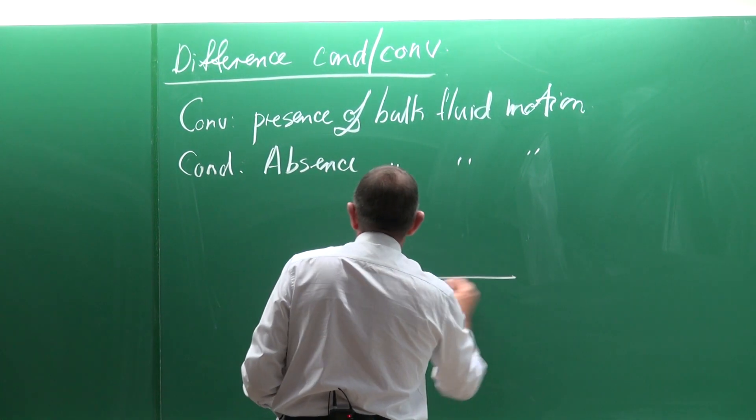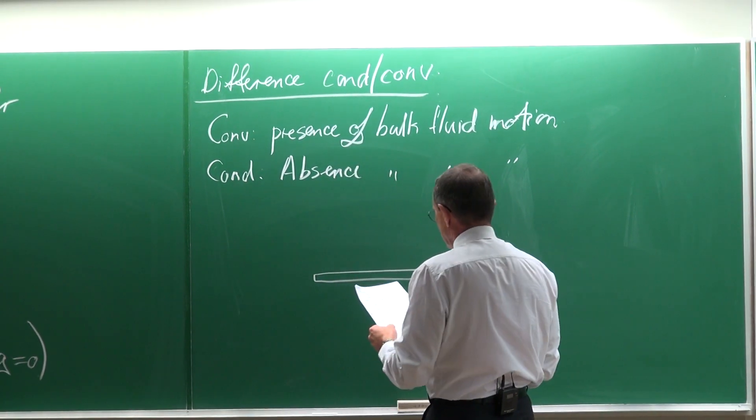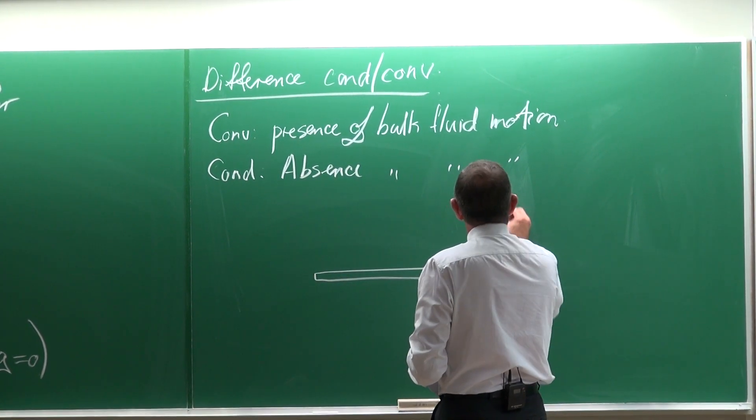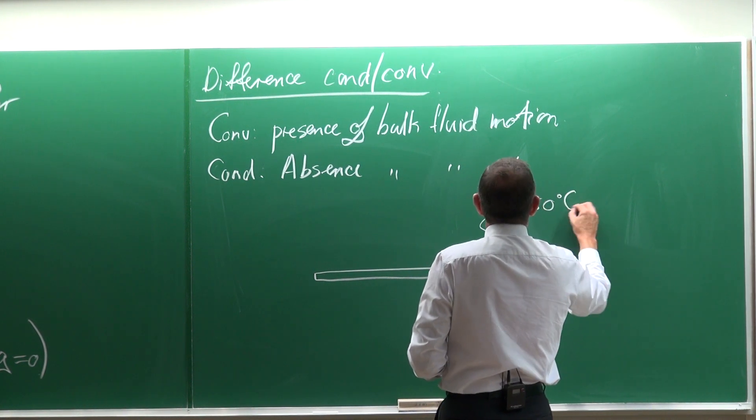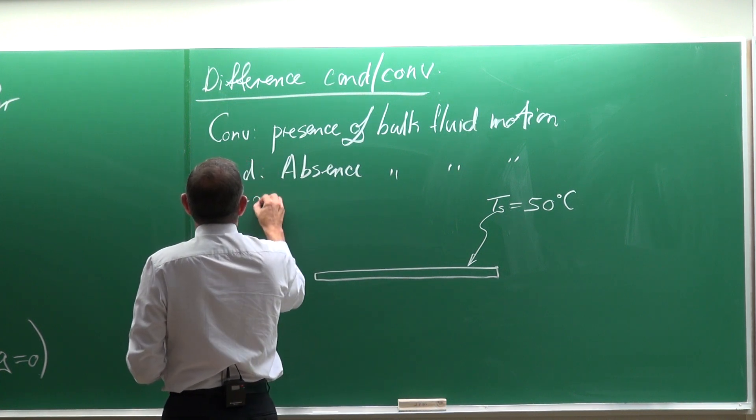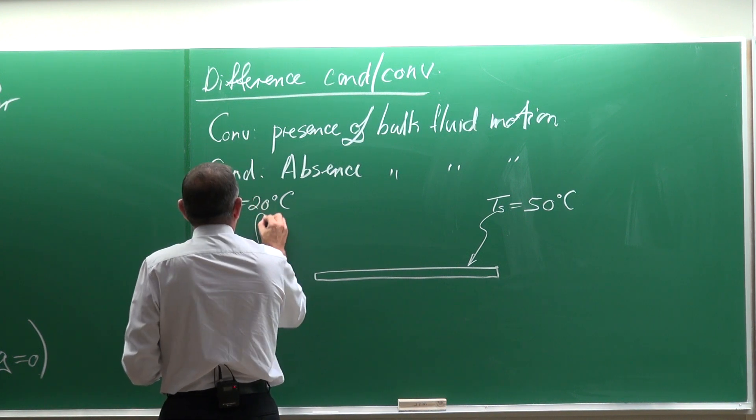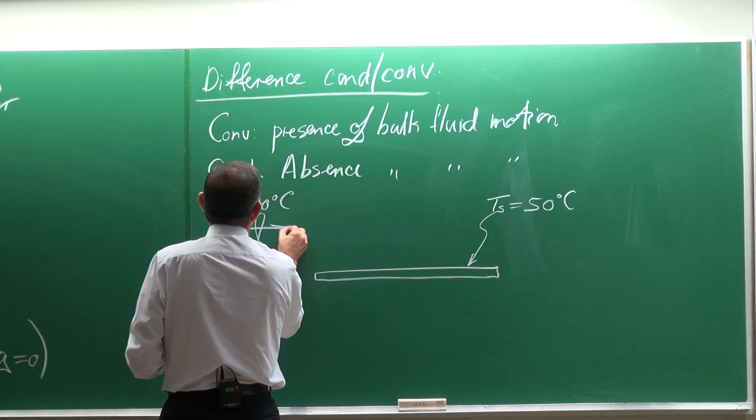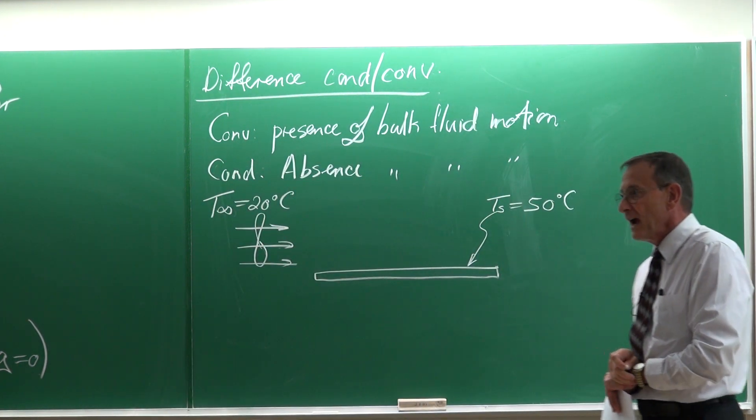If we want to show it schematically, we can do it like this. Let's suppose this is a heated plate. The surface temperature is 50. And we've got the air at a temperature of 20 degrees C. And we have a fan or a pump. For air, it will typically be a fan.